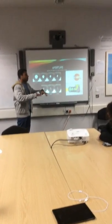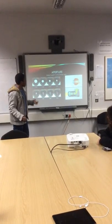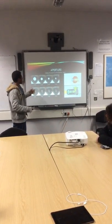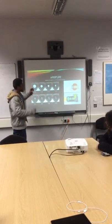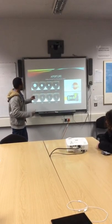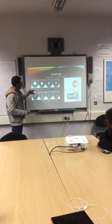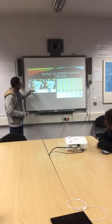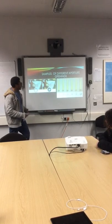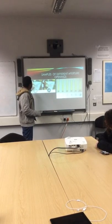The darker the environment, the more light you need to bring in, so the lower the aperture number. It's kind of backwards to what you'd have thought — the lower number lets in more light.